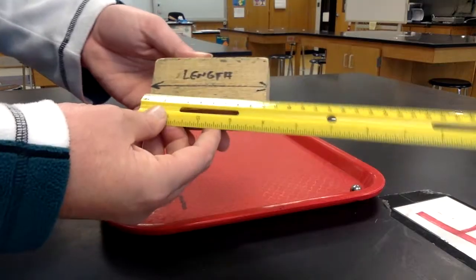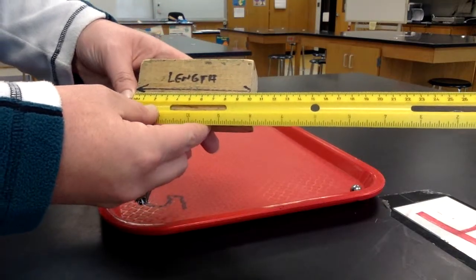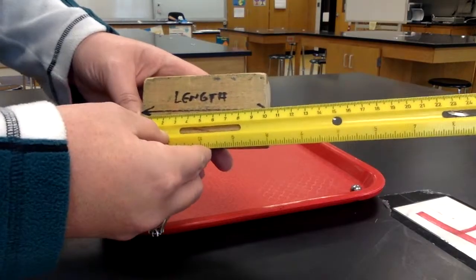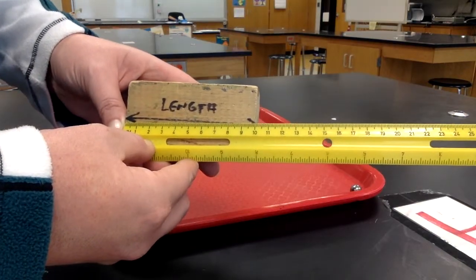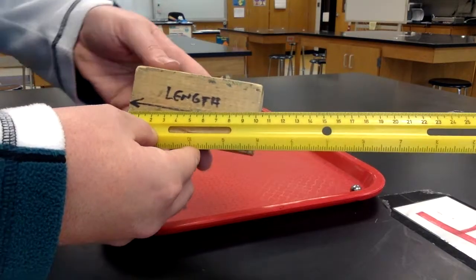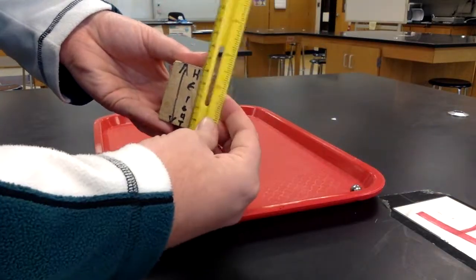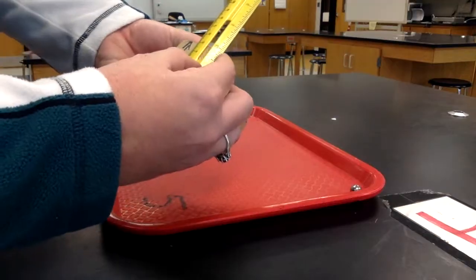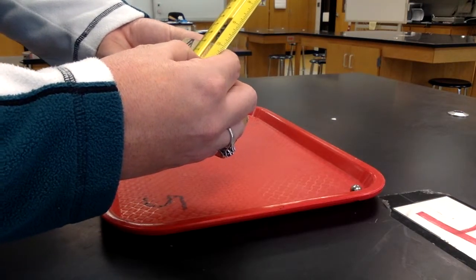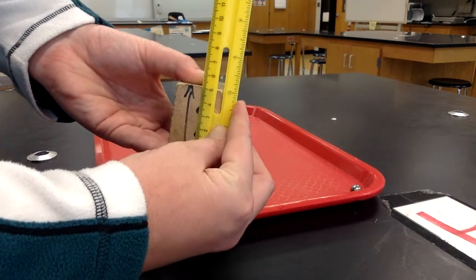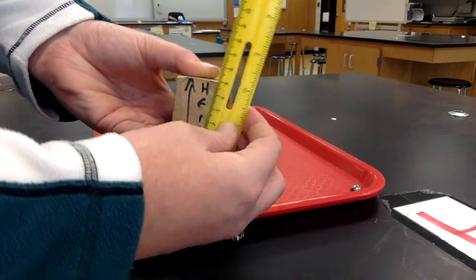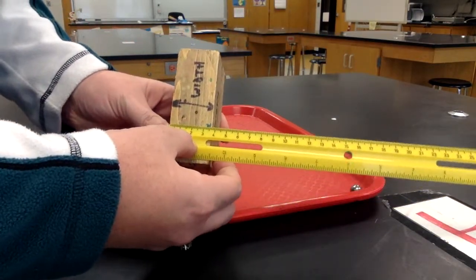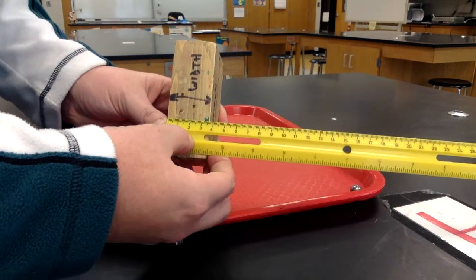To measure the length, measure across. The length would be exactly 10 centimeters. To measure the height, measure how tall the object is. This would be 5.2. To measure the width, measure how wide the object is. This would be 3.6.